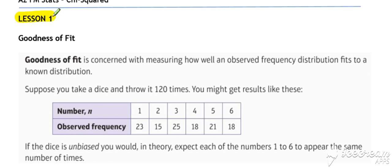So in lesson one we consider the idea of goodness of fit. Goodness of fit, as the name suggests, is concerned with measuring how well an observed frequency fits to a known distribution. We can collect some data and actual results, and then look at those results and see how closely they match what we'd expect to get if we believed that the situation follows a particular distribution.